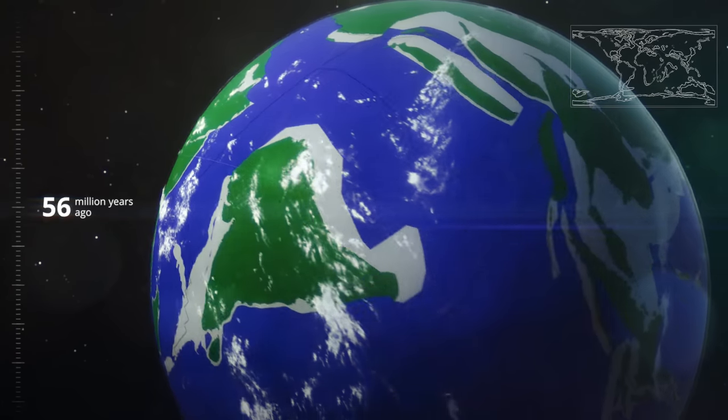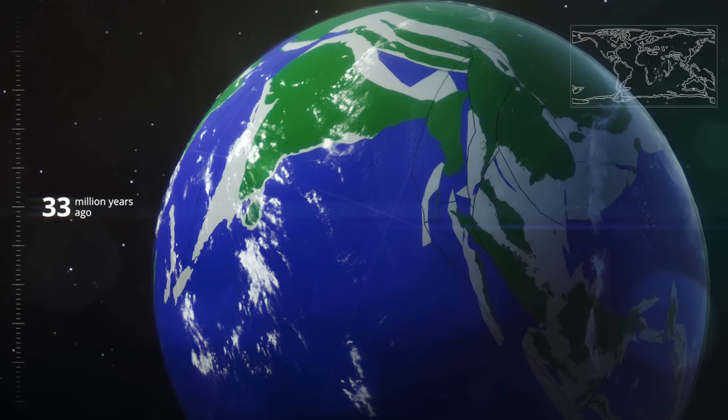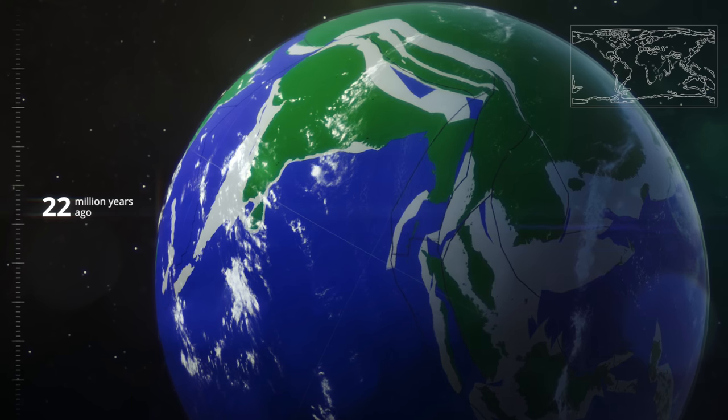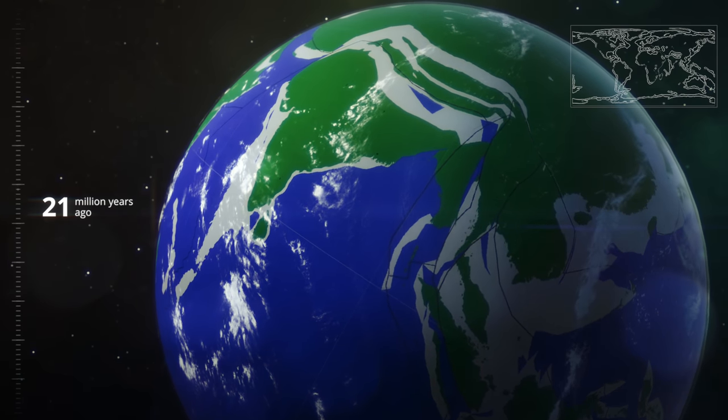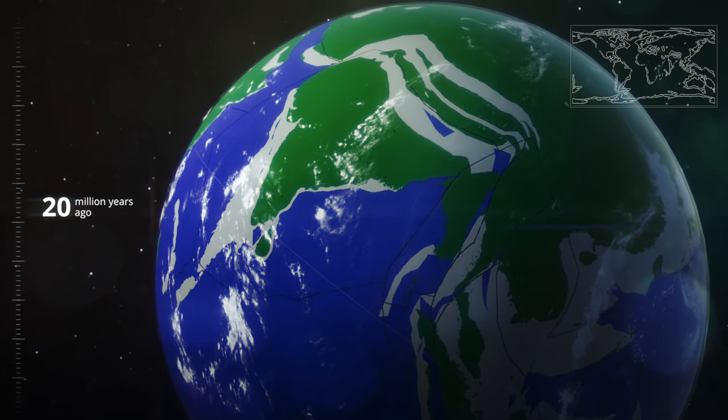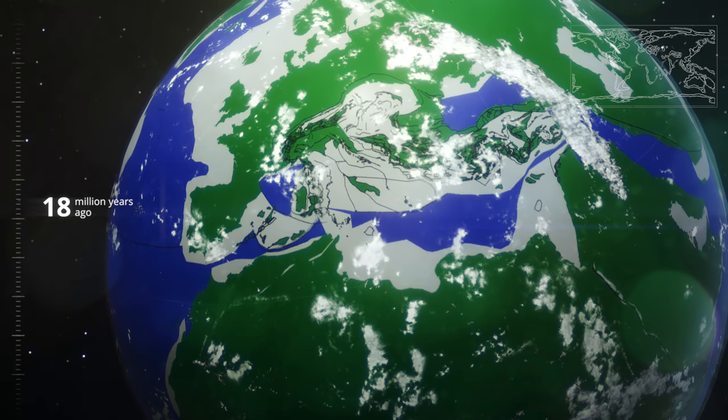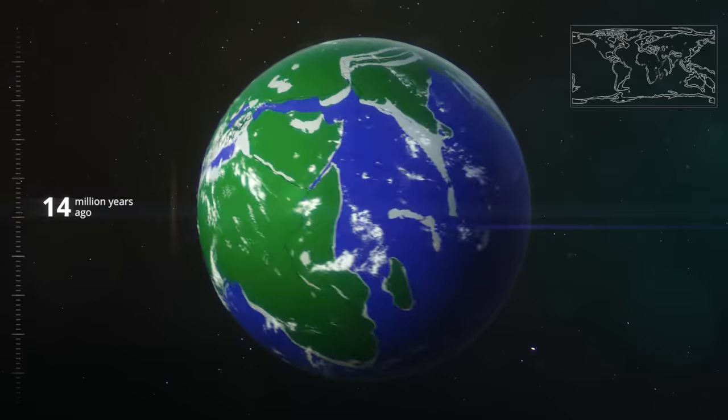These plates started to move along plate boundaries. At so-called subduction zones, one plate moves below another. The upper plate can get squeezed together and the rocks of the lower plate can be scraped off, creating massive mountain ranges all over the world. It is a never-ending process.